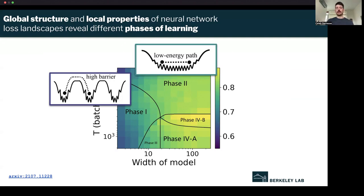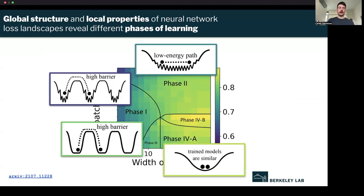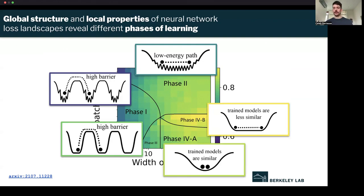We have the high barriers, low energy path. Here's a high barrier with smooth. And here we have the low mode connectivity, but very similar or dissimilar models. Now you might ask, how do we compute these things and where are we getting these toy models from? We'll talk about some tools introduced by the machine learning community for measuring local properties and global structure.